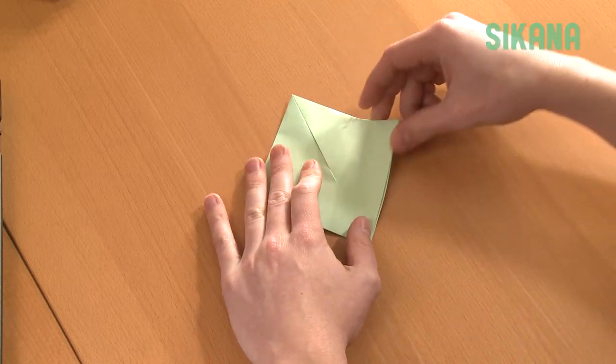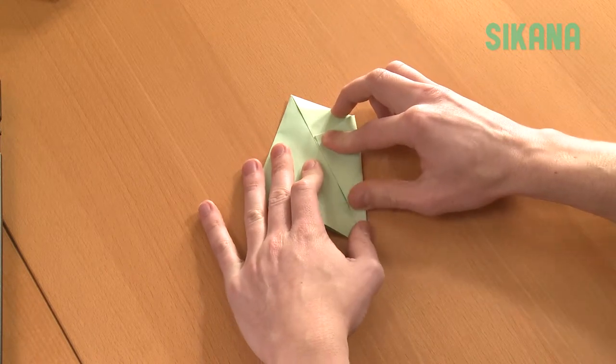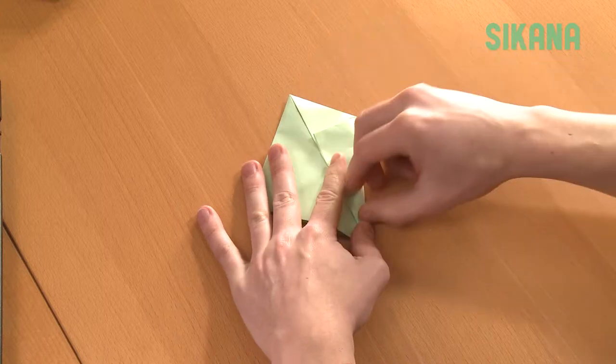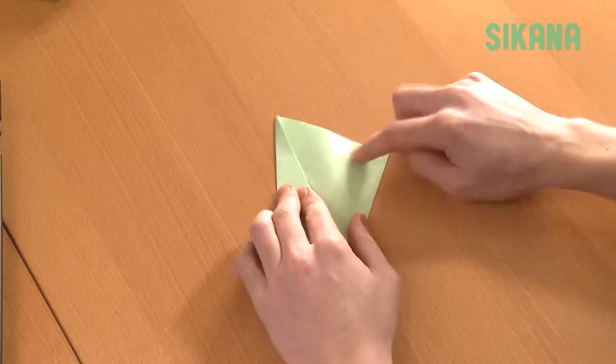Then, fold this part on the center line. Make sure to crease it well since the paper is very thick. Do the same on the other side.